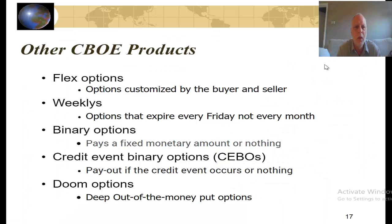Other CBOE — Chicago Board Options Exchange — products include: flex options, which are customized by the buyer and seller rather than having set strike prices and expirations; weeklies, which last eight days and expire every Friday rather than once a month; binary options, which pay a fixed monetary amount or nothing, rather than varying with S minus X; credit event binary options, similar to credit default swaps, which pay out if a credit event occurs or pay nothing; and DOOM options, which are deep out-of-the-money put options, also serving as an alternative to credit default swaps.